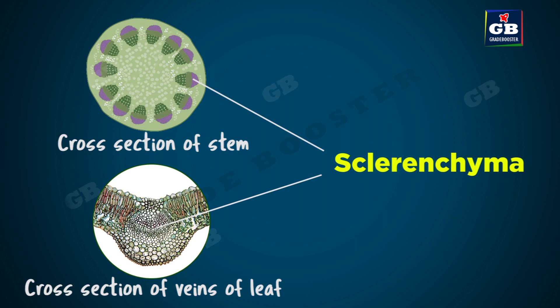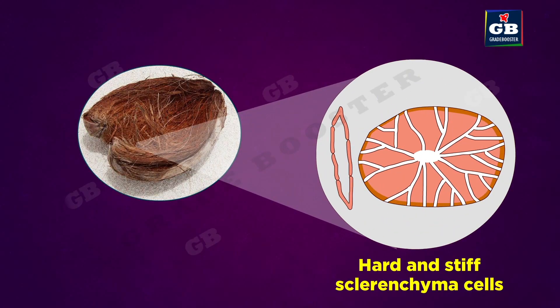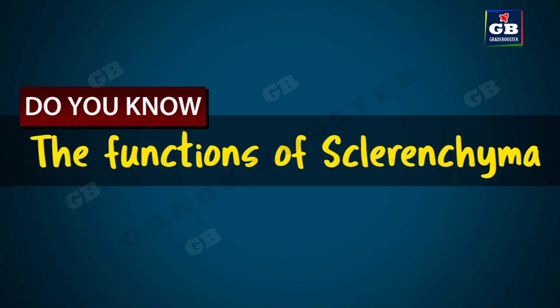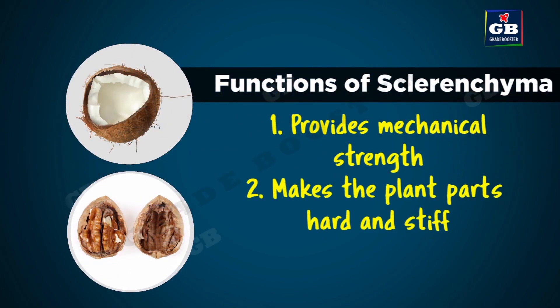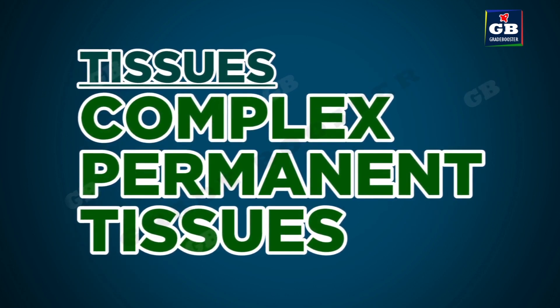Sclerenchyma is also located in the coverings of seeds and nuts. The covering of the coconut, the coconut husk, is made up of sclerenchyma tissue. It provides mechanical strength to the plants, making the plant and its parts hard and stiff.